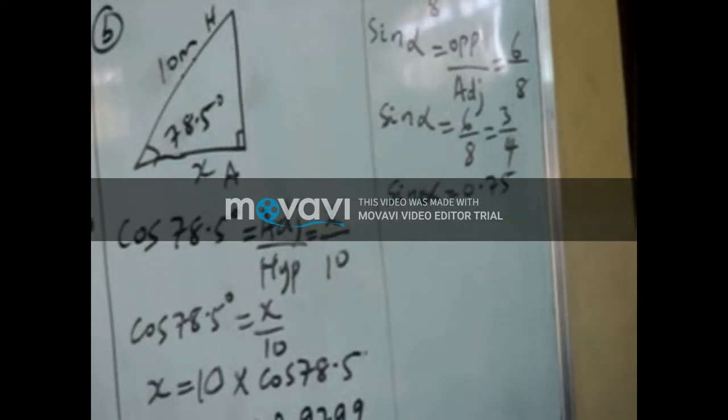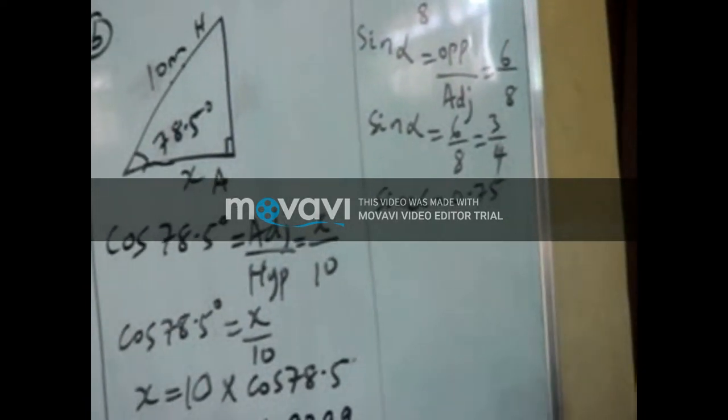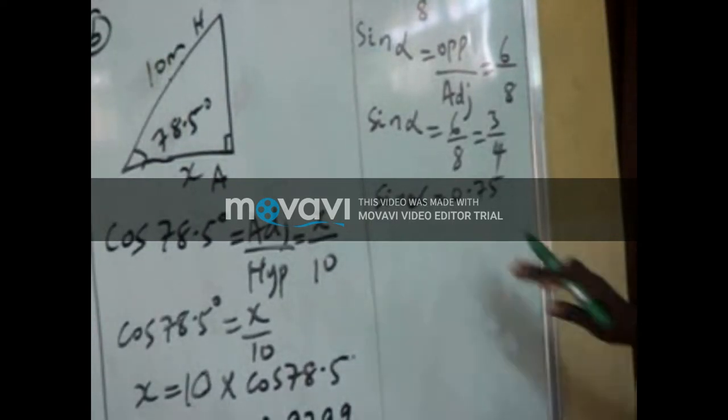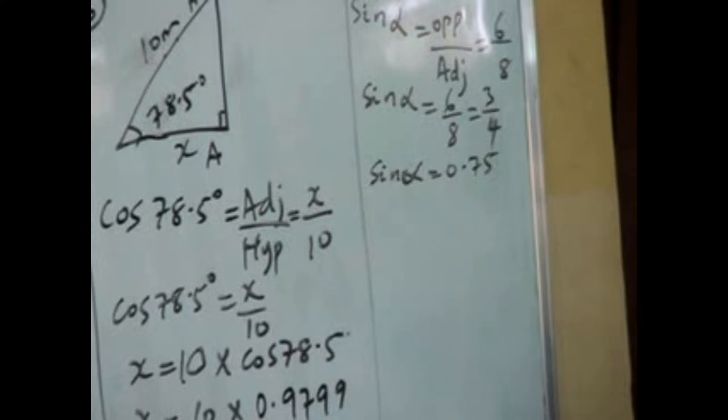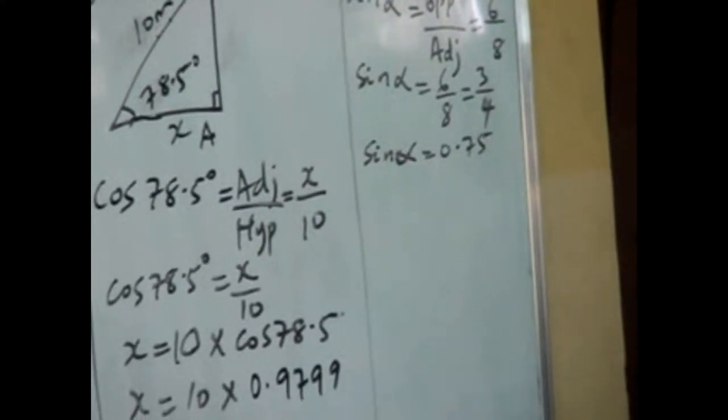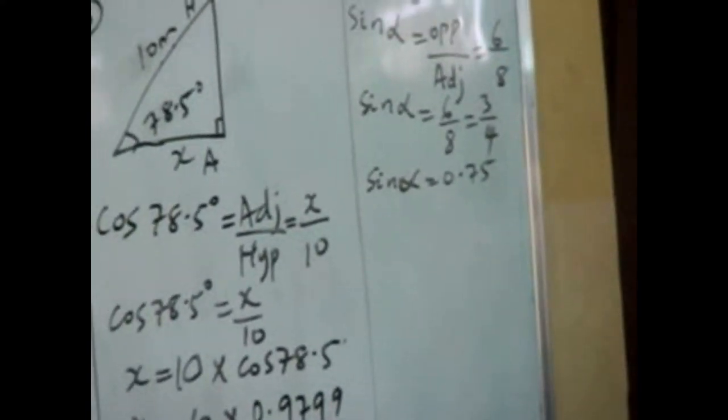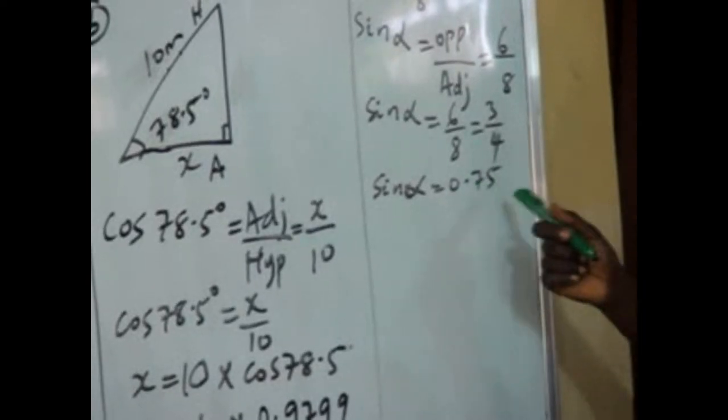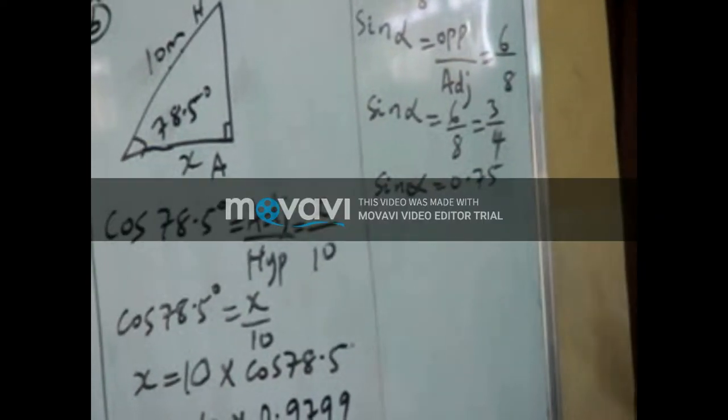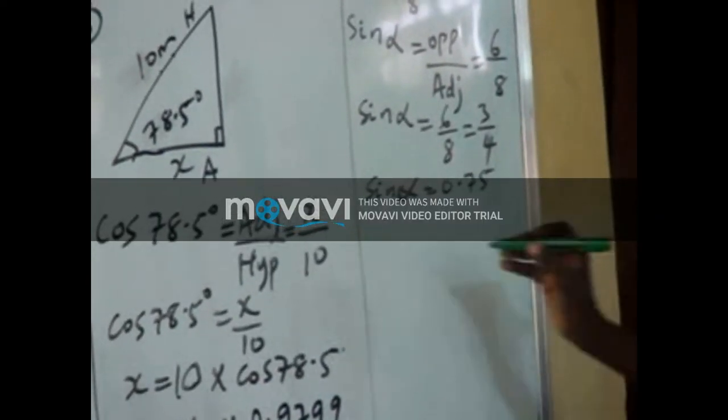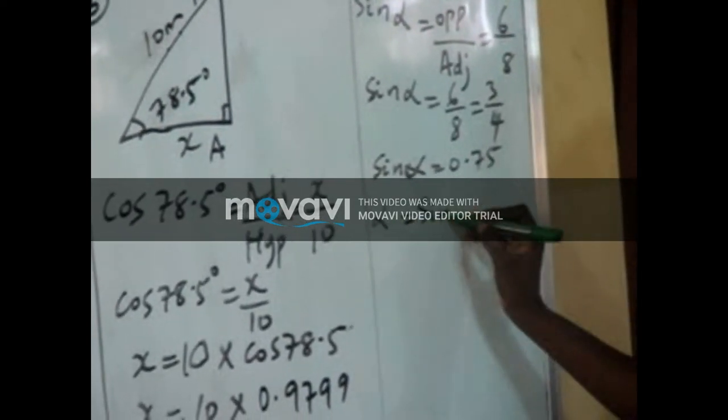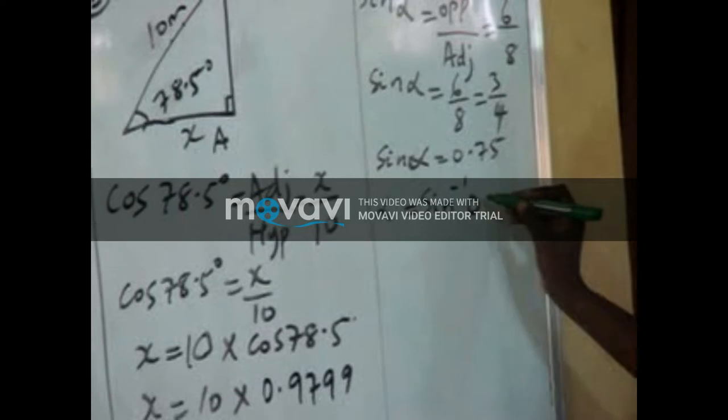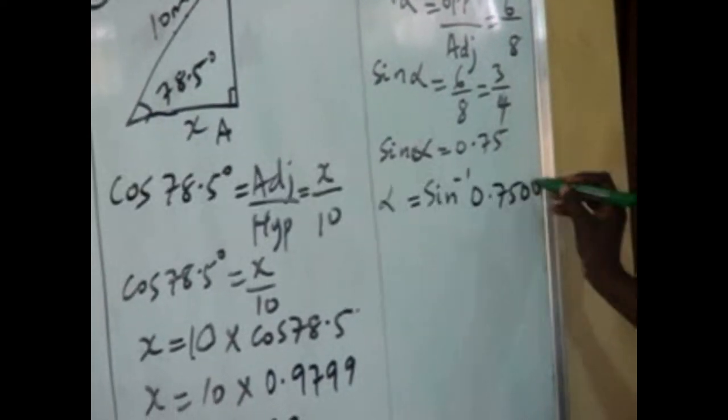But because you are working in 4-figure tables, now you have words like this as a decimal fraction, you have zeros to make it 4-figure tables. Because when you go to check for this one, you will not see 0.75, you will see 0.7500. So we are going to say for alpha, it will be sin, so we are going to write 0.7500. What is the meaning of this?